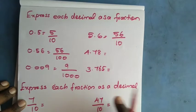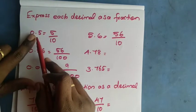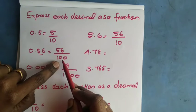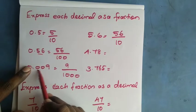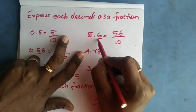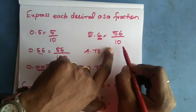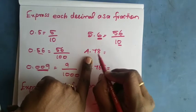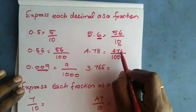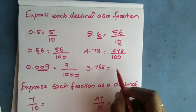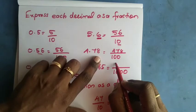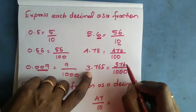Let's express each decimal as a fraction. 0.5 — after the decimal there is 1 digit, so it is 5 divided by 10. 0.56 — after the decimal there are 2 digits, so 56 divided by 100. For 3 decimal places, the denominator is 1000. For 5.6, after the decimal is 1 number so 56 divided by 10. For 4.78, after the decimal there are 2 places so denominator is 100. Write the number removing the decimal point: 478 divided by 100, giving 3765 divided by 1000 for the next example.